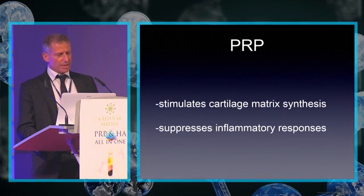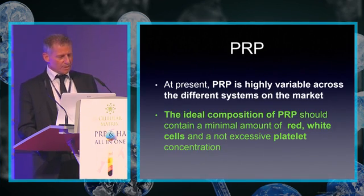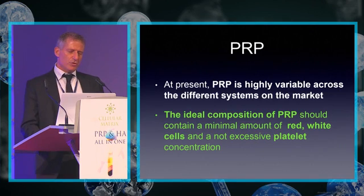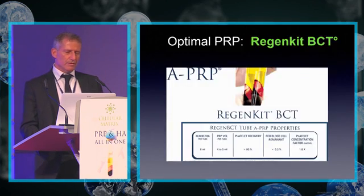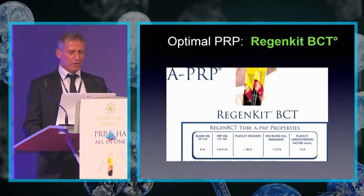PRP stimulates cartilage matrix synthesis and suppresses the inflammatory response. At present, PRP is highly variable across different systems on the market. The ideal composition of PRP should contain a minimum amount of red and white cells and not an excessive platelet concentration. On this slide, you can see an optimal example of PRP.